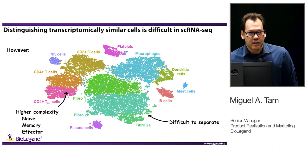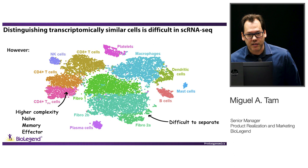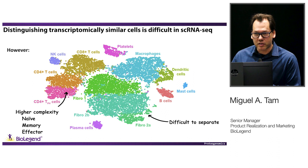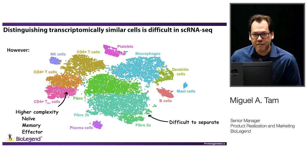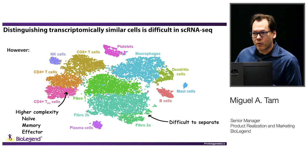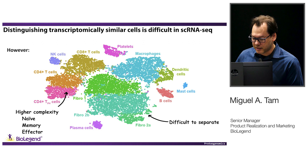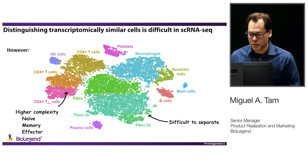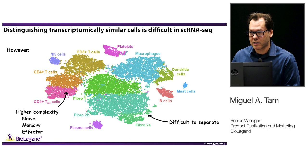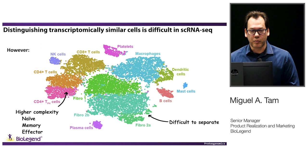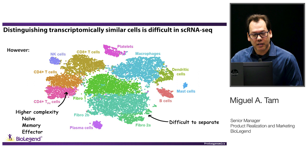The single-cell RNA-seq technique has some limitations, and this is one of them: when the cells are transcriptomically similar, it's very difficult to tease them apart and cluster them based only on transcriptomic data. Through decades of immunology research, we know there are different T-cell populations — CD8 T-cells, CD4 T-cells, and subpopulations within those, such as naive, memory, and effector T-cells. It's the same case with fibroblasts. If you know a very specific antigen that can define a population, it's easy to identify it, but that's a limitation of this technology.